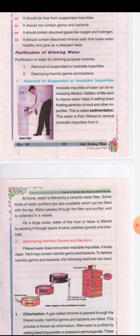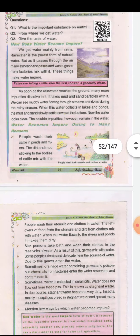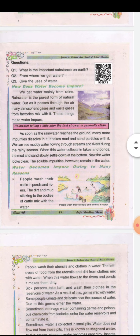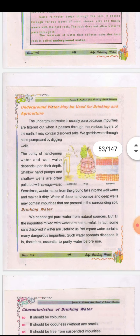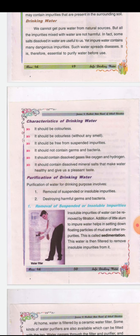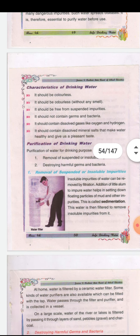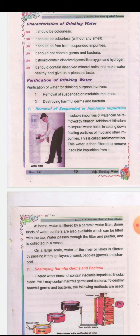Dear students, purification of drinking water is our topic today. Before this, we have discussed all about safe drinking water — how water becomes impure, what is rainwater, how pure is rainwater, underground water used for drinking and agriculture, and the characteristics of drinking water. Today's topic is purification of drinking water.